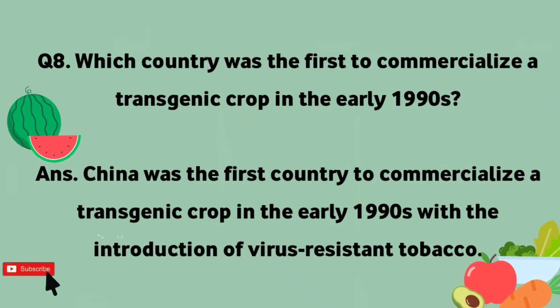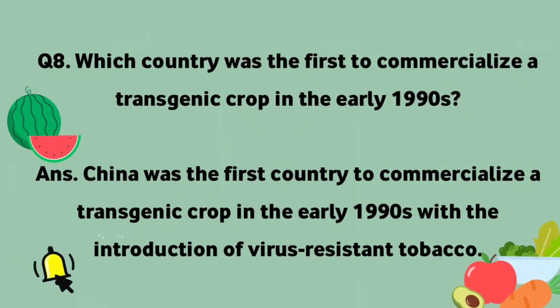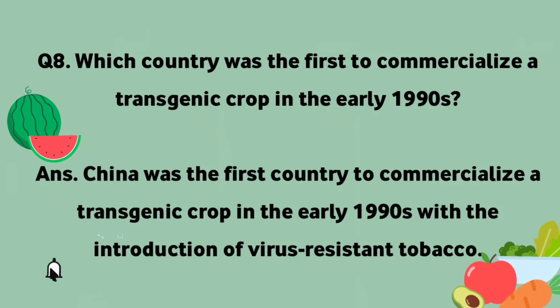Who was first to commercialize a transgenic crop in the early 1990s? China was the first country to commercialize a transgenic crop in the early 1990s, with the introduction of virus-resistant tobacco.